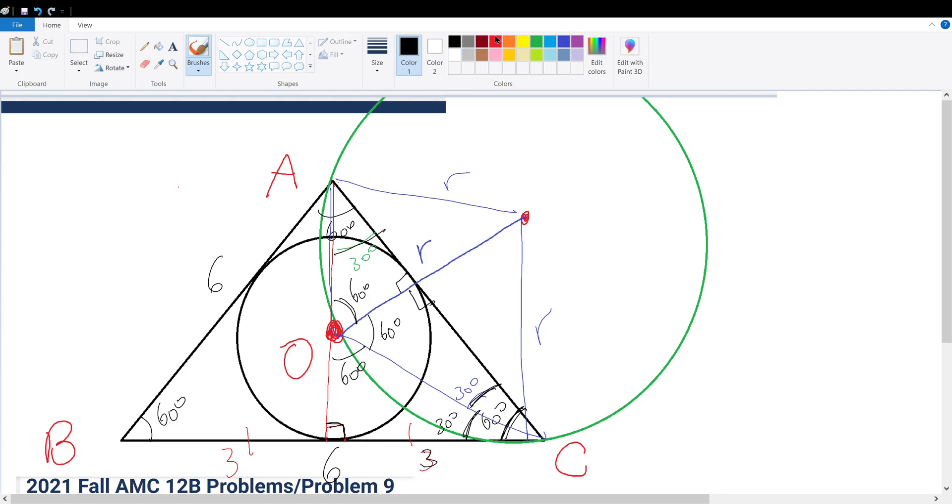So we can find what side length OC is, because we're given that's 3, that's 30 degrees, and that's 60 degrees. Let's call this H.